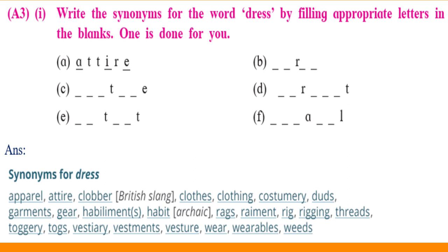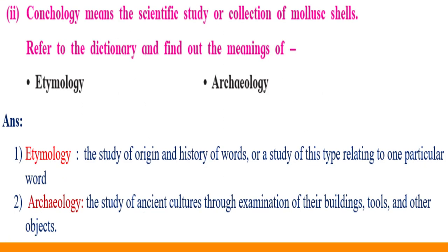Activity A3: Write the synonym for the word 'dress' by filling appropriate letters in the blank. You should find out and complete these words. Additionally, 'etymology' means the study of the origin and history of words, or the study relating to one particular word. 'Archaeology' means the study of ancient cultures through examination of their buildings, tools, and other objects.